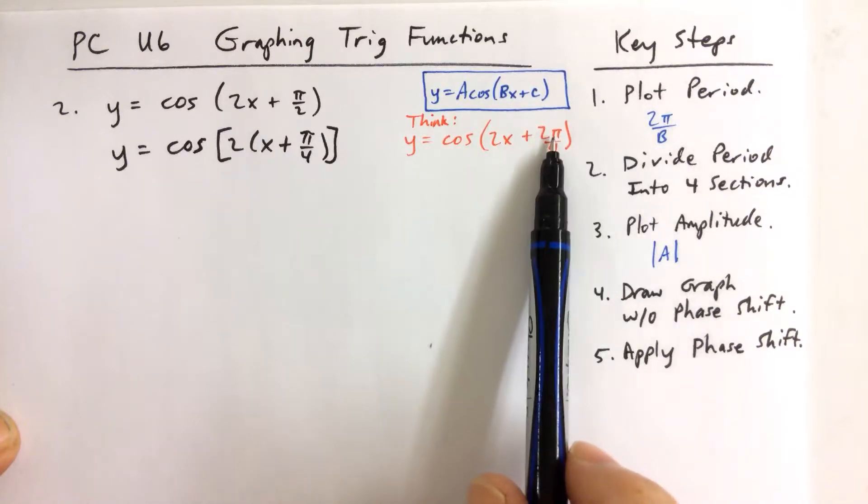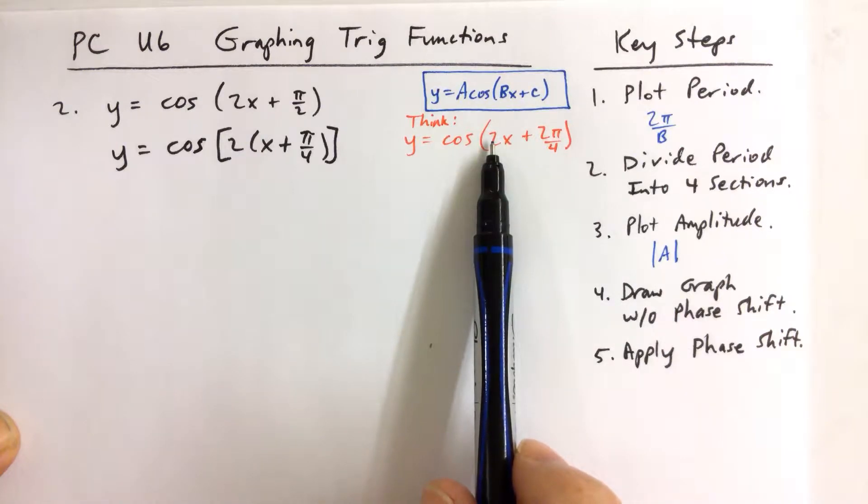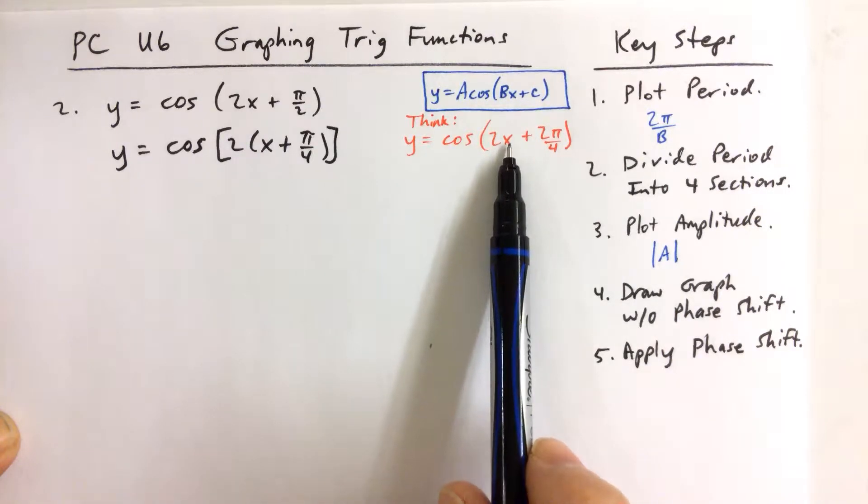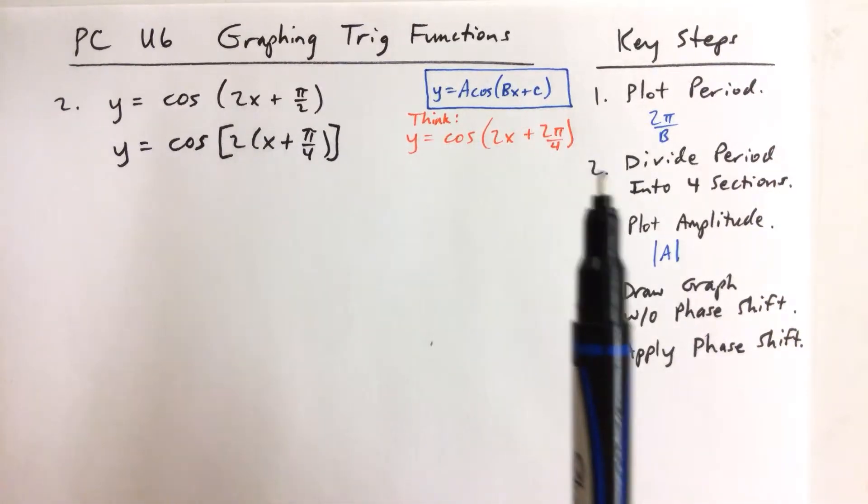And that helps us to know if I'm going to factor out a 2 from both of these terms. Factoring out a 2 from 2x, I'm left with x. Factoring out a 2 from 2 pi over 4, I'm left with just pi over 4. So that's one of those sticking points.